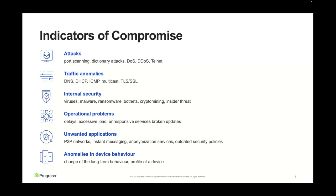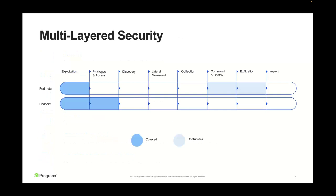Indicators of compromise could be different types of attacks like scanning for open ports over the network, brute force attacks, denial of service, or anomalies that look different than what we expect from protocols such as DNS and others. It also includes different unwanted applications and changes in behavior of devices. All of those can help us identify whether something in the network is malicious and should be investigated.